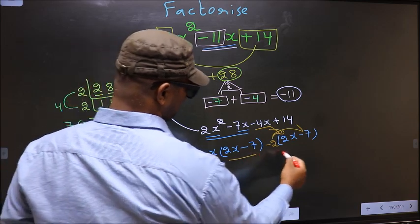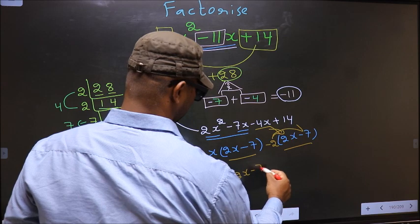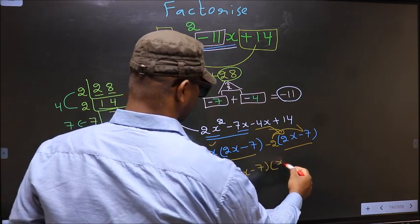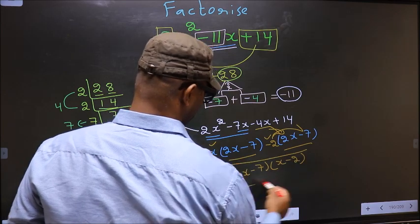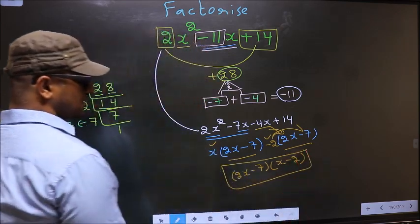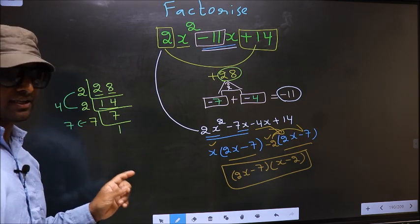Now you take out (2x - 7) common. So here you have x and here -2. This is our answer. Am I clear?